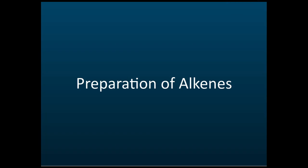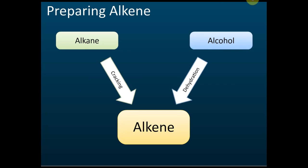There are two methods to prepare alkenes: cracking of alkane, or dehydration of alcohol. Through cracking of alkane, we will get alkene.